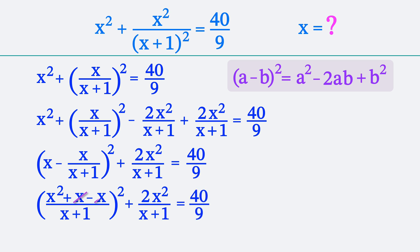We cancel out x minus x in the numerator of the first fraction. And finally get x squared divided by x plus 1, all of this squared, plus 2 multiplied by x squared divided by x plus 1. And all of this is equal to 40 divided by 9.